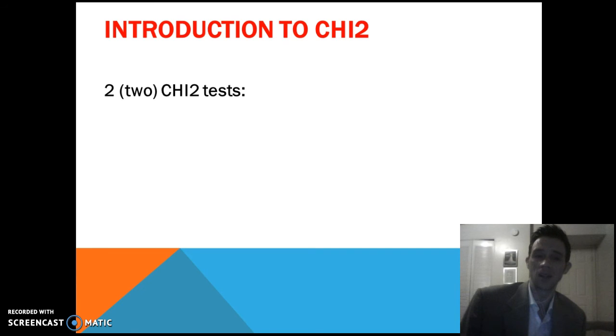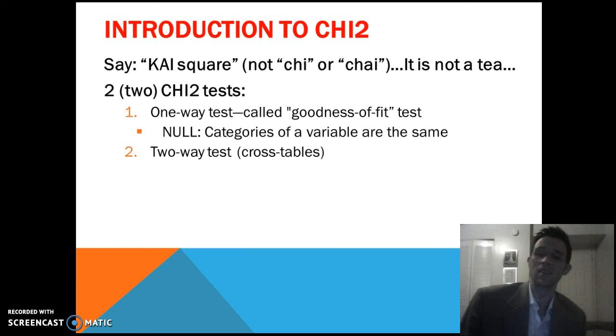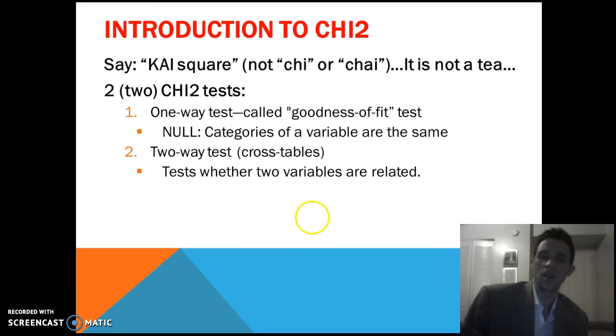So when we talk about chi-square, we have two different chi-square tests, and one is a one-way test called goodness of fit, and another is a two-way test, and we use this with our cross tabulations or our crosstabs. So again, this null hypothesis is the idea, is everything the same? So for a one-way test, your interest is, is there any difference in the categories of that single variable? For a two-way test, you're saying, does the independent variable tell us anything about the dependent variable?